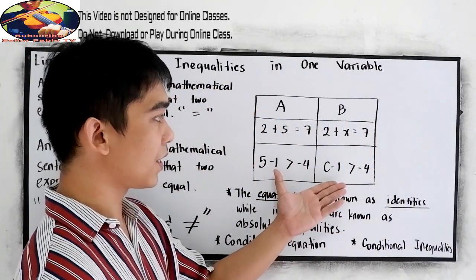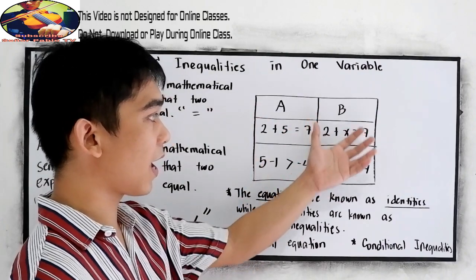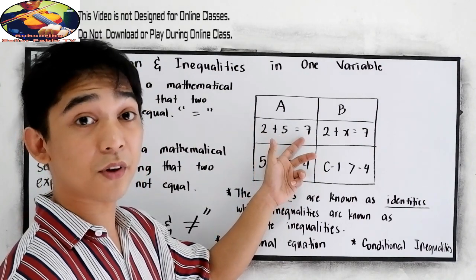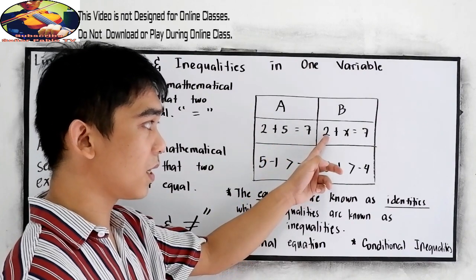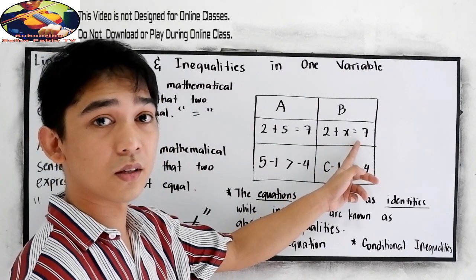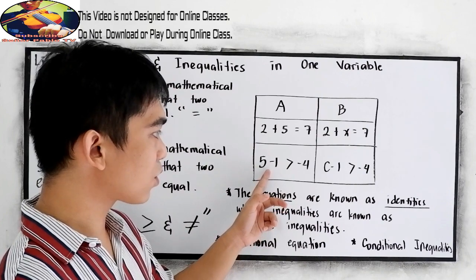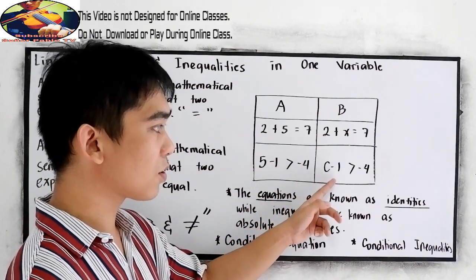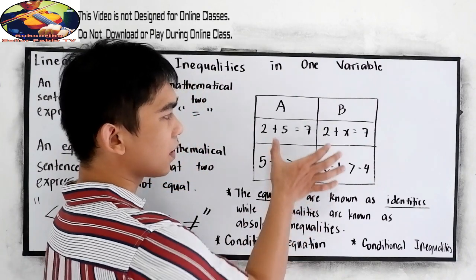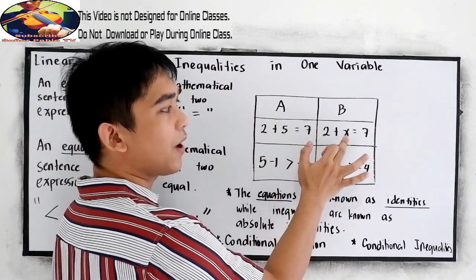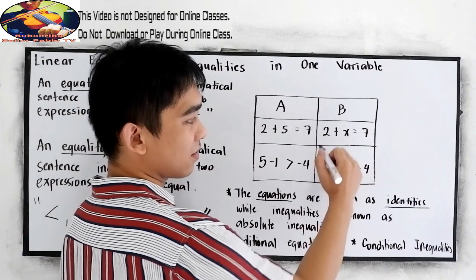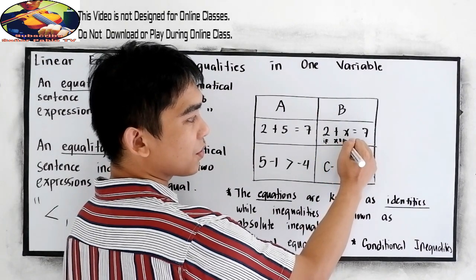Now we start with a table. We have columns A and B. In column A, 2 plus 5 is equal to 7 — we know that is true. In column B, 2 plus x is equal to 7. We know that if x is equal to 5, the answer is 7. This is an example of an equation.